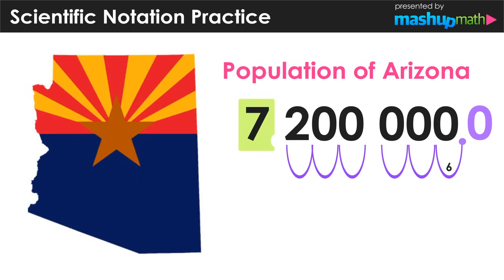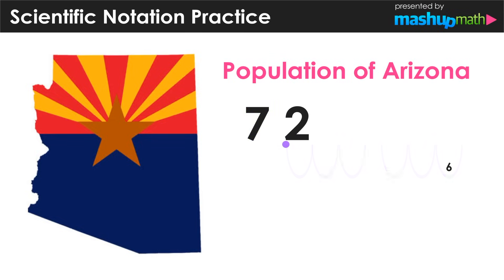Now we can imagine moving that original decimal point to the left until it is in front of that first non-zero digit, again in this case the 7. When we're using scientific notation, we can get rid of all of the zeros that come after the last non-zero digit — in this case all the zeros that come after the value of 2. So now we have a much cleaner, much smaller, and much more manageable 7.2.